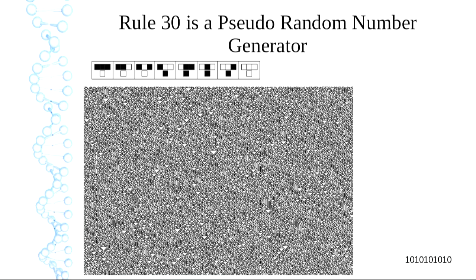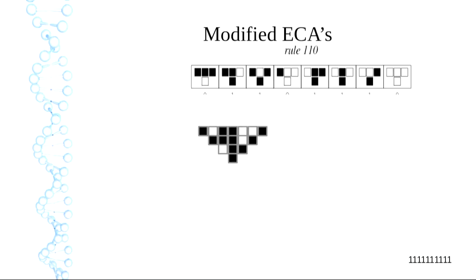Rule 30 is a pseudo-random number generator. You put in any input and it basically just makes a pattern. There are glider-like structures but they don't persist very long — they're quite fragile; they hit another glider and disintegrate. Rule 30 is a random number generator at 27 bits and above. If you go below that bit rate it stops being a random number generator — there are phase changes from one type to another in some cases.